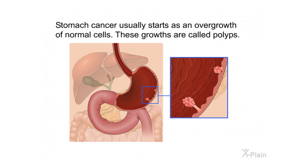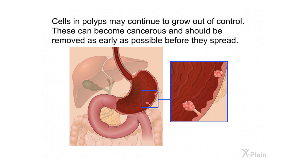Stomach cancer usually starts as an overgrowth of normal cells called polyps. Cells in polyps may continue to grow out of control and become cancerous. They should be removed as early as possible before they spread.